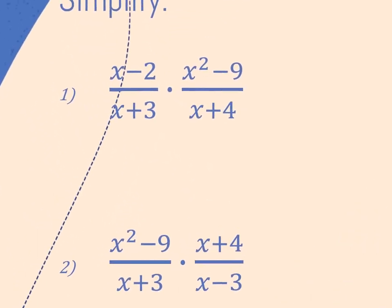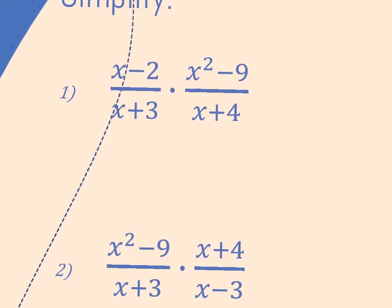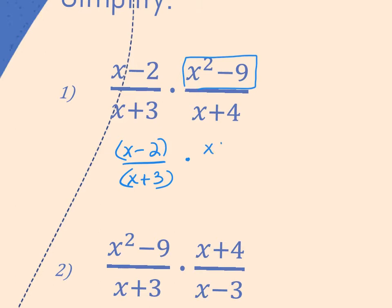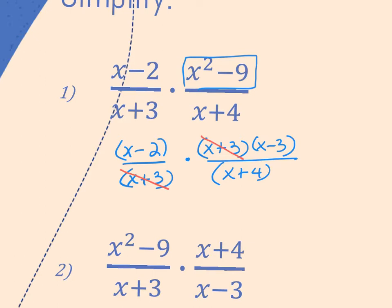First step is to check each section — the numerator and denominator of all your fractions — and see which ones can be factored. The only part I need to factor here is the numerator, and this is the difference of two squares. I'll rewrite the first fraction, and factor x squared minus 9 into x plus 3 times x minus 3, with x plus 4 still at the bottom. Now I look for things to simplify — top to bottom or diagonally, not side to side. I have an x plus 3 in the bottom and match it with one in the top. These become 1's.